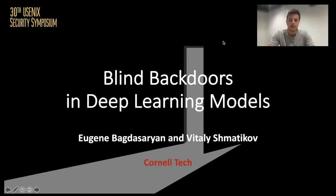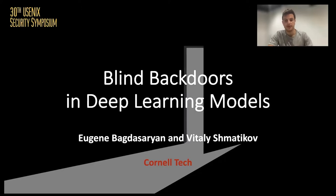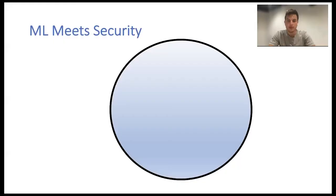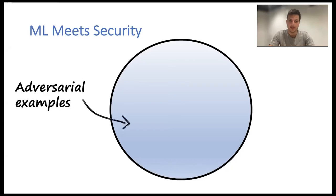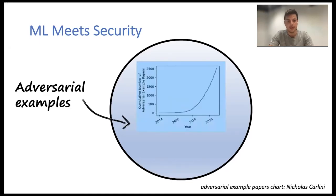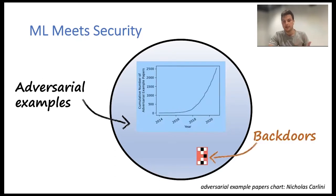Hi, my name is Eugene Bagdasaran and I'm going to talk about the Blind Backdoors in Deep Learning Models paper. This is a joint work with Vitaly Shmatikov. We're interested in the field of machine learning security. The field has been dominated by adversarial examples, with the number of papers really growing exponentially, and we're wondering where backdoors research fits in.